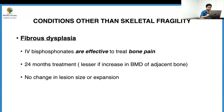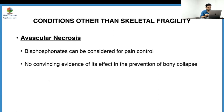For fibrous dysplasia, many patients present with pain in these lesions and IV bisphosphonates are highly effective for treating bone pain. The maximum treatment duration is two years, and should be shorter if BMD in other bones is increasing. However, bisphosphonates lead to no change in the size of the fibrous dysplasia lesion or any expansion. For avascular necrosis, bisphosphonates can be used for pain control, but there is no evidence of effect in preventing bony collapse.